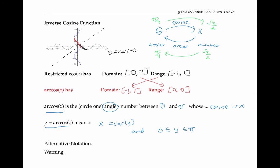The alternative notation for arc cosine is cosine inverse. And again, we have to be careful: cosine to the negative one of x is not the same thing as one over cosine of x.